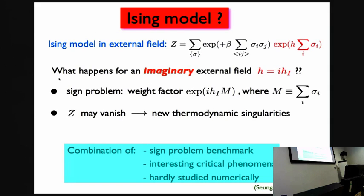So we're going to have a look at the Ising model again. This is the partition function with nearest neighbor ferromagnetic interaction and external field term. I'm going to make the external magnetic field H pure imaginary, which makes the action complex. So there's a weight factor which is complex, where M is the magnetization. It's a simple model with a severe sign problem.